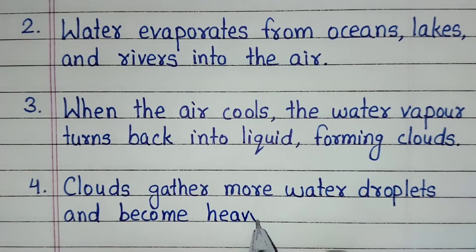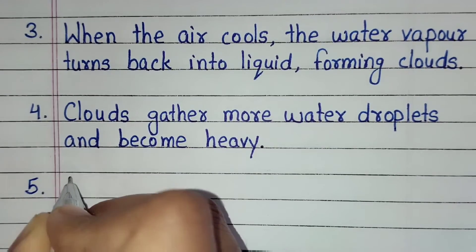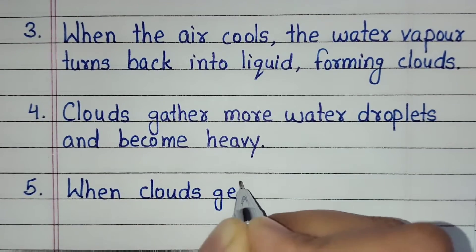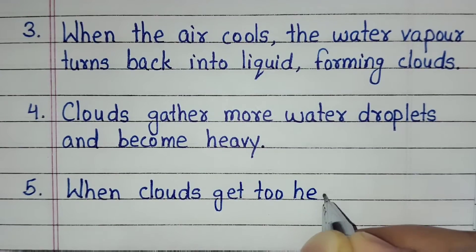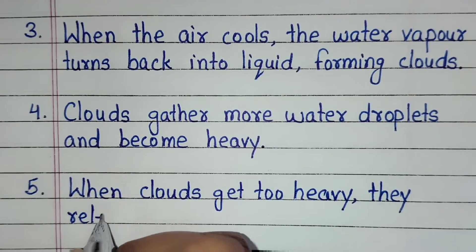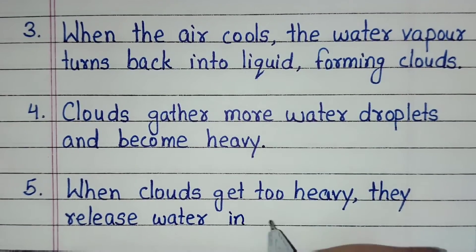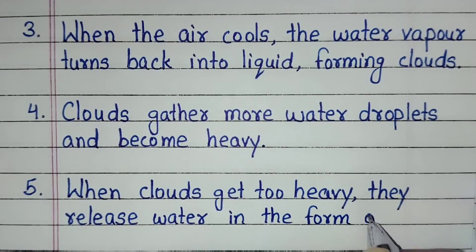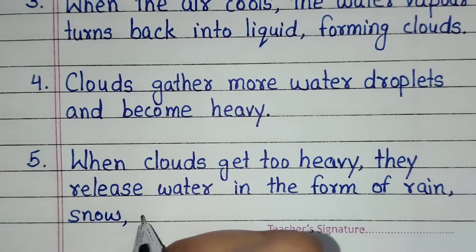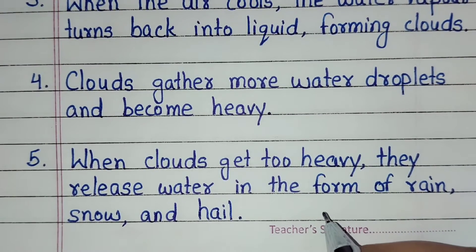Clouds gather more water droplets and become heavy. When clouds get too heavy, they release water in the form of rain, snow and hail.